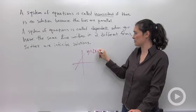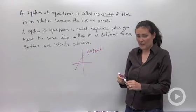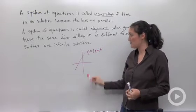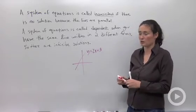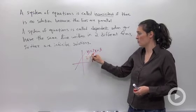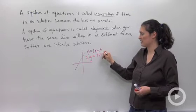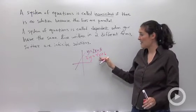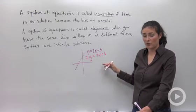y equals 2x plus 3. I could call that exact same line using a different name. If I multiply everything by 2, I'll have 2y equals 4x plus 6. That's the same equation written in different forms.